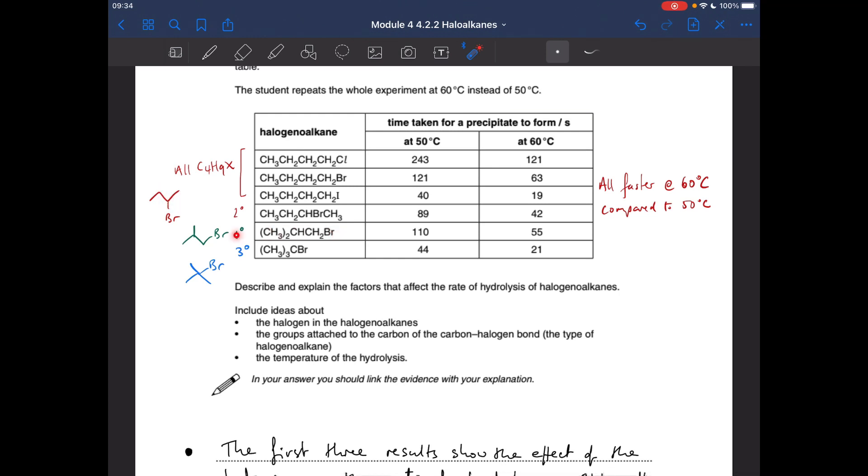This one here in green is a primary halogenoalkane. The carbon with the halogen on is bonded to one carbon directly. And the blue one, this one here, is a tertiary halogenoalkane. The carbon with the halogen has got three carbons directly bonded. So you can see that the tertiary one hydrolyzes the fastest, and the primary one hydrolyzes the slowest.